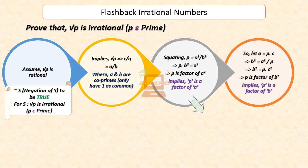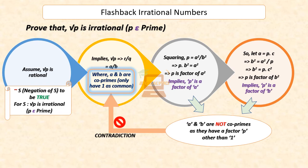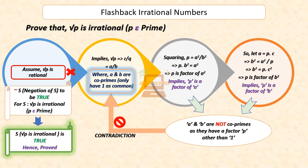Therefore, A and B have at least P as a common factor. Now this contradicts the fact that A and B are co-primes, due to which they can't have a common factor other than 1. This contradiction has resulted because of our incorrect assumption that square root of P is rational. So, by proof of contradiction, we conclude that square root of a prime number P is irrational.